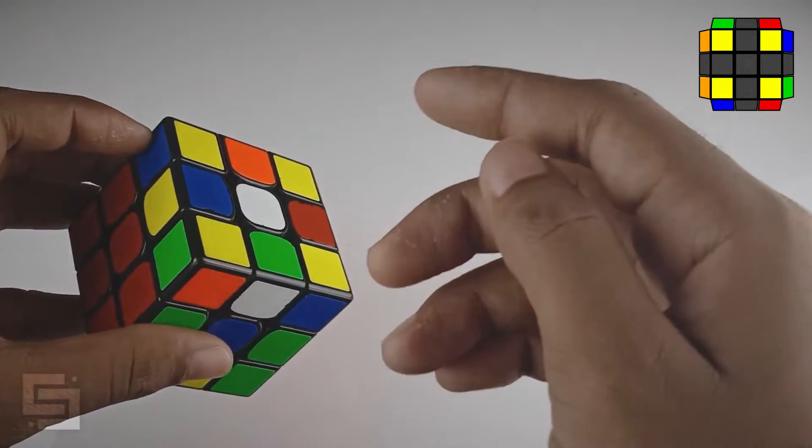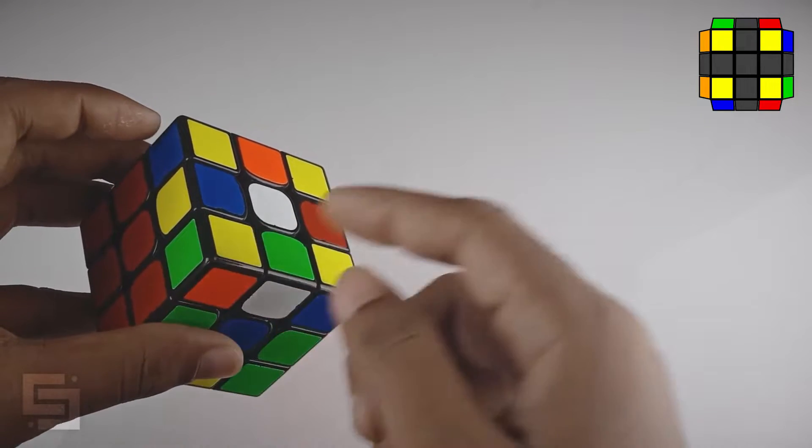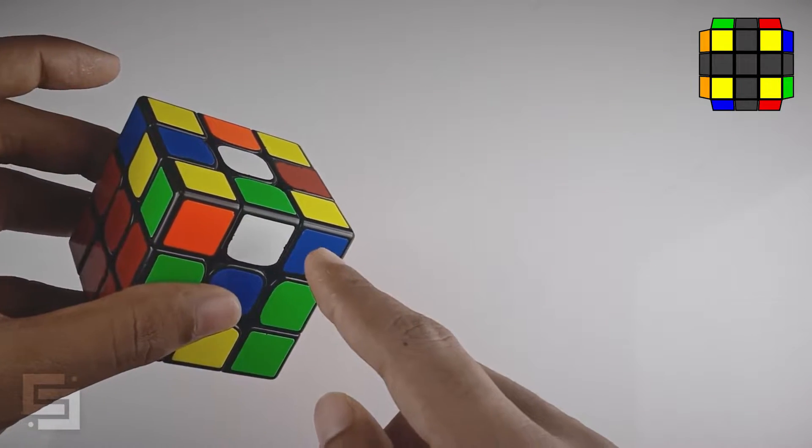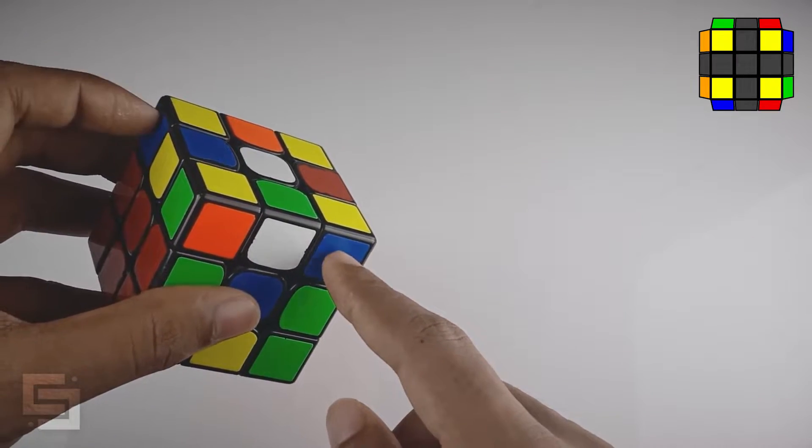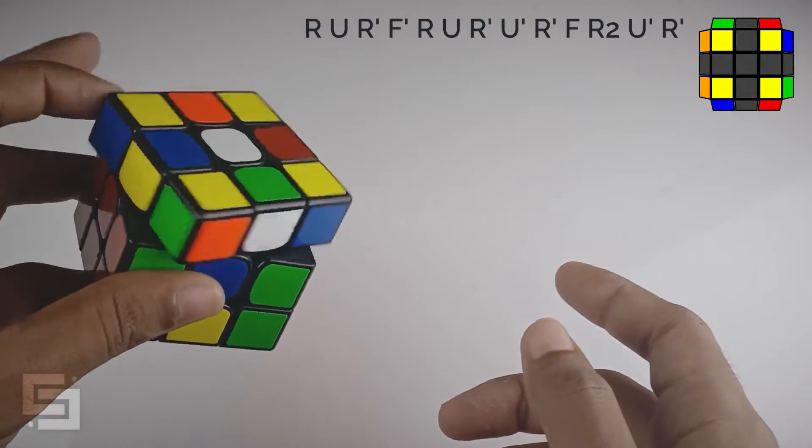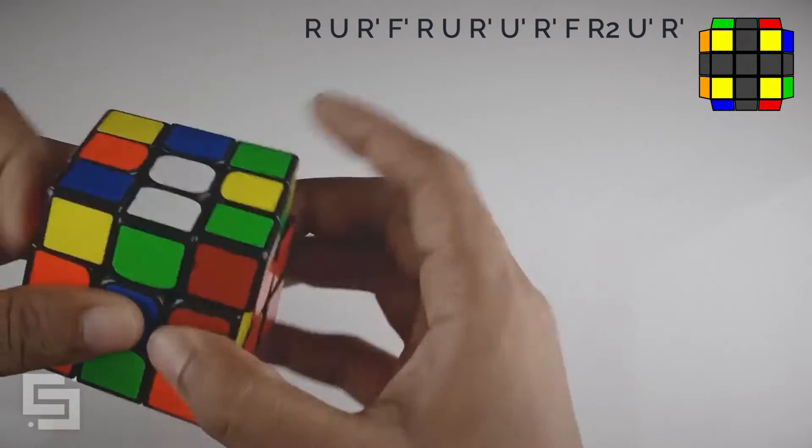So here we see opposites, but we don't know for sure if this is the opposite case or the matching case. So here we look at this sticker and if these two stickers are matching, then we have the matching case. And you can simply do U2 and then just start with the algorithm.